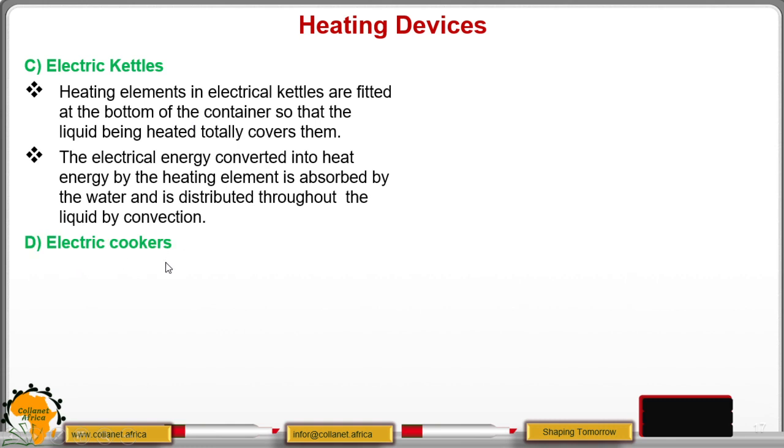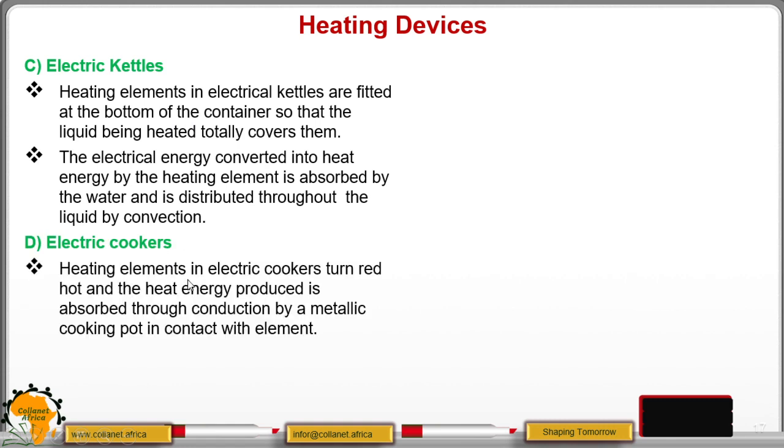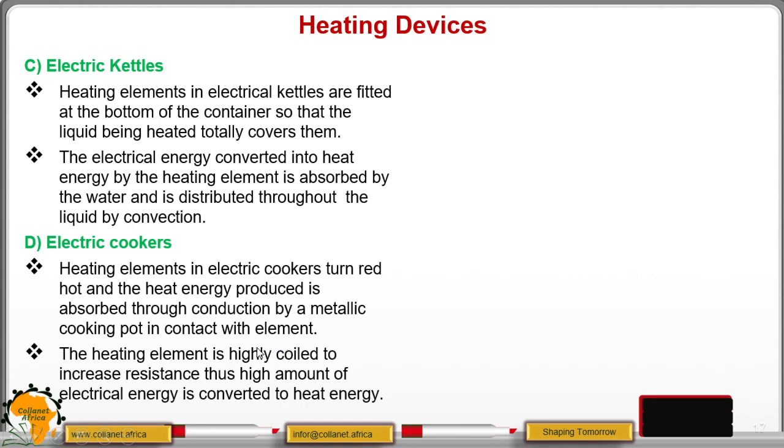Then from there, we have electric cookers. Now, heating element in electric cookers turn red hot. And the heat energy produced is absorbed through conduction by metallic cooking pot, which is in contact with the element.